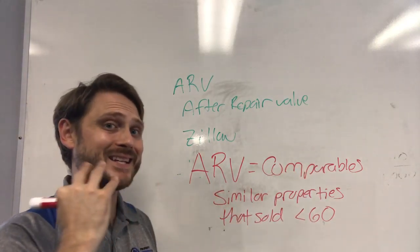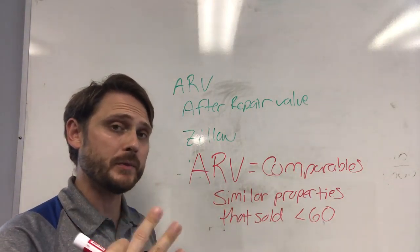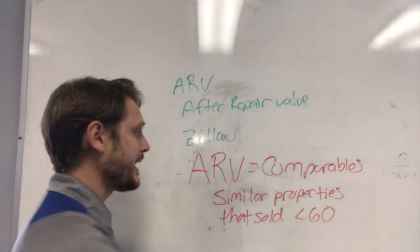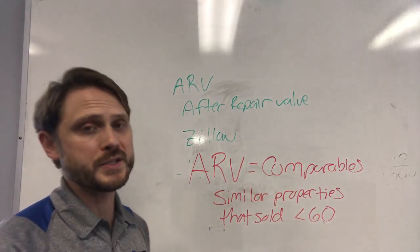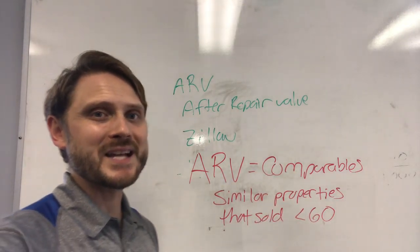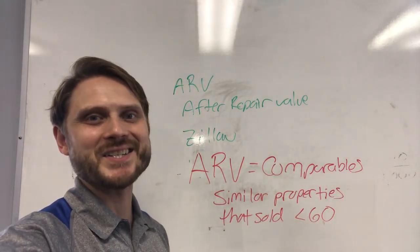So ARV is the after repair value. Finding at least three similar properties and averaging those prices together, or using the lowest. Thanks so much guys, talk to y'all soon.